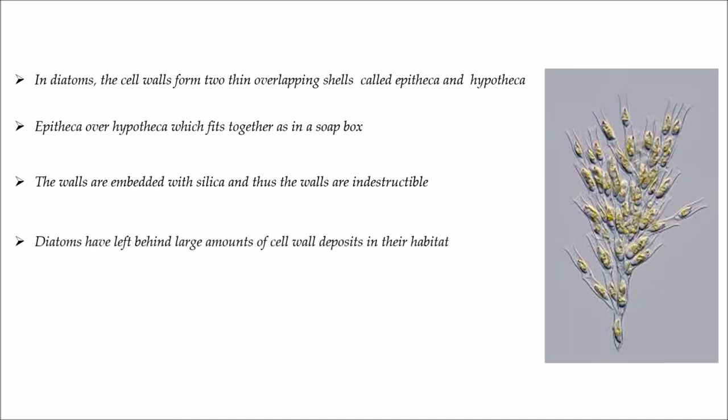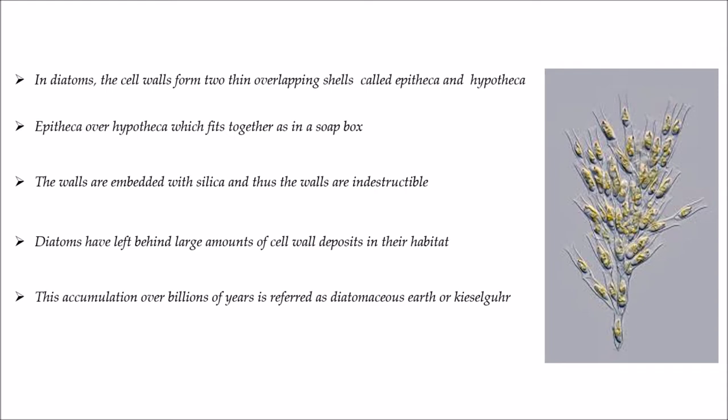Diatoms have left behind large amounts of shell wall deposits in their habitats. This accumulation over billions of years is referred to as diatomaceous earths or kieselguhr. Due to silica deposits, the soil is gritty and is used in polishing, filtration of oils, and making of syrups.